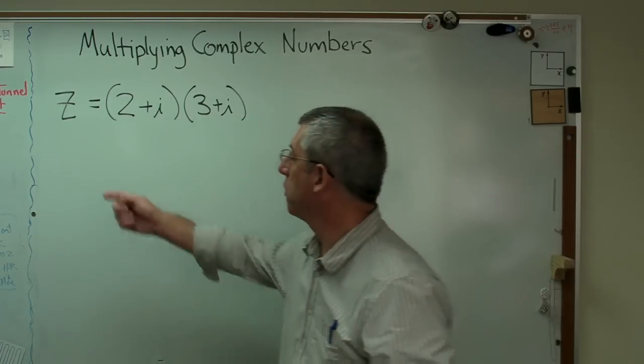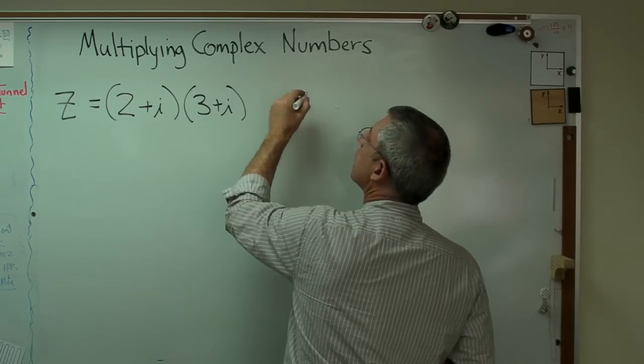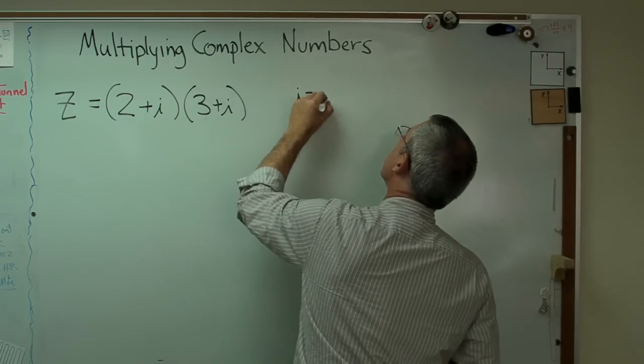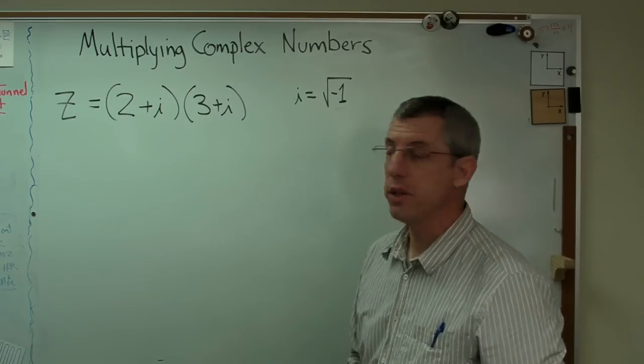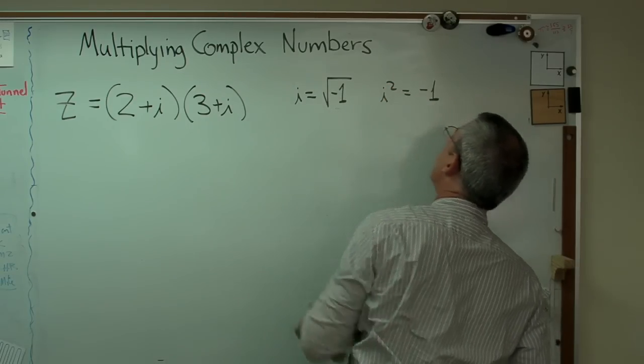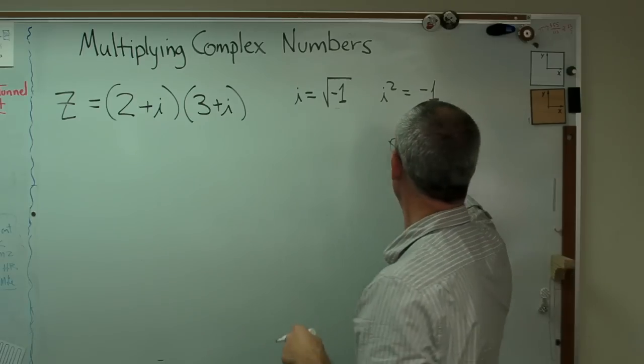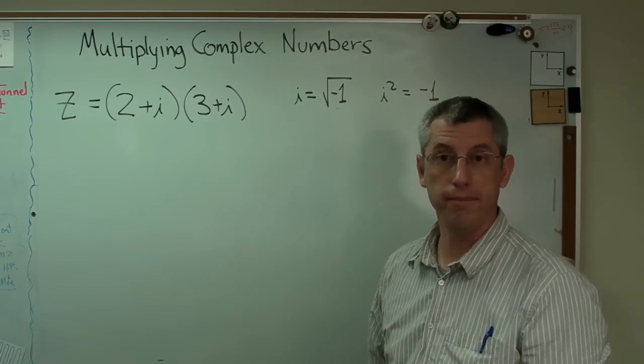Now remember z is often used to refer to complex numbers. Also a reminder that i is the square root of minus 1, so that means i squared is minus 1. If you want to keep going, i cubed is minus i, i to the fourth is 1.